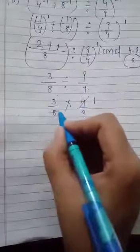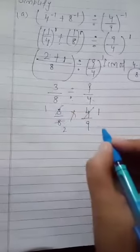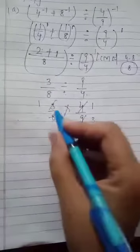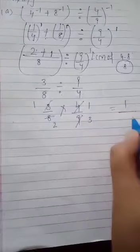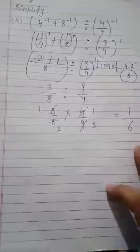4 and 1 is 4. 4 and 2 is 8. 3 and 1 is 3. 3 and 3 is 9. So 1 into 1 is 1, and 2 into 3 is 6. The answer is 1 by 6.